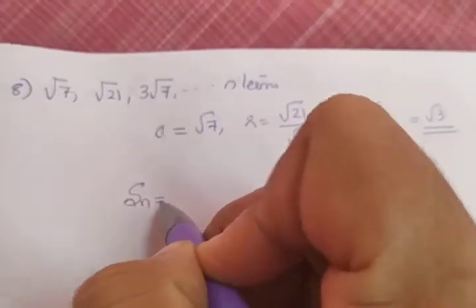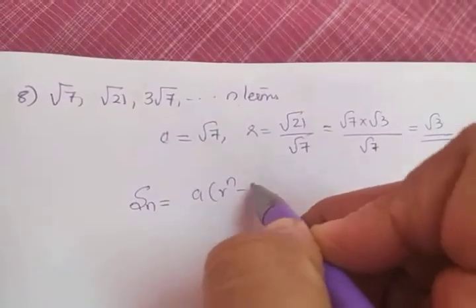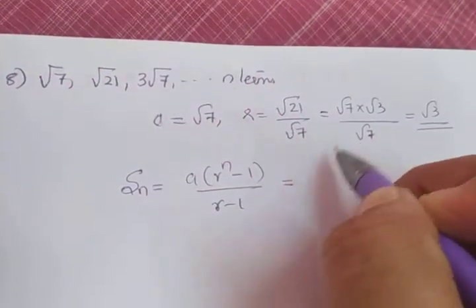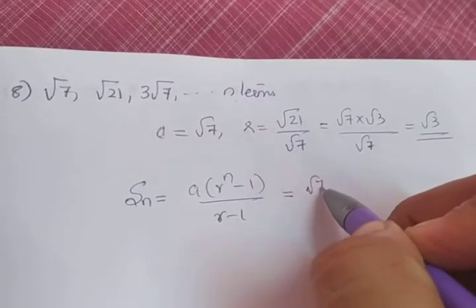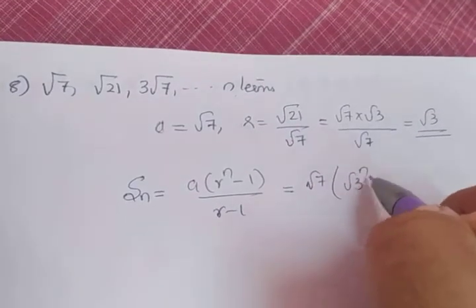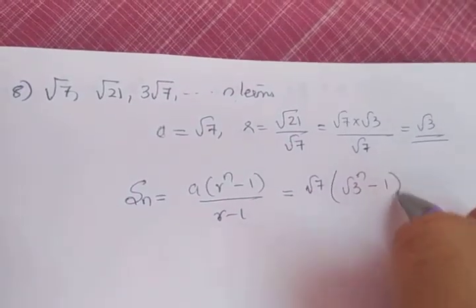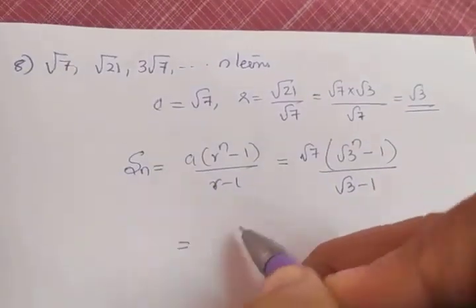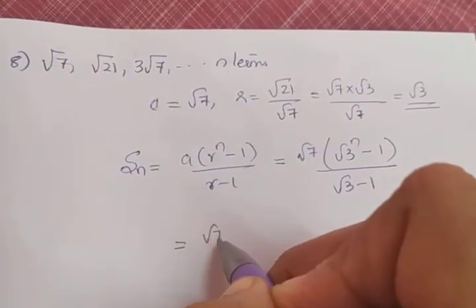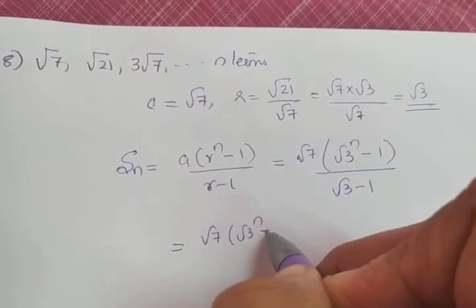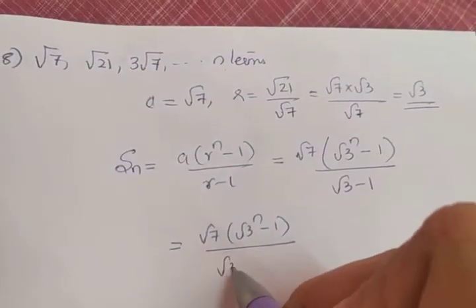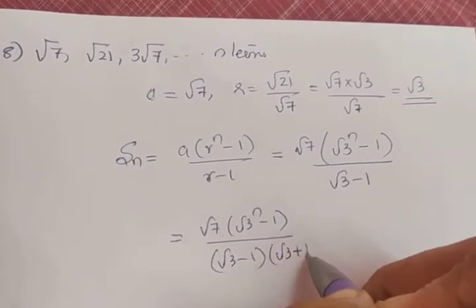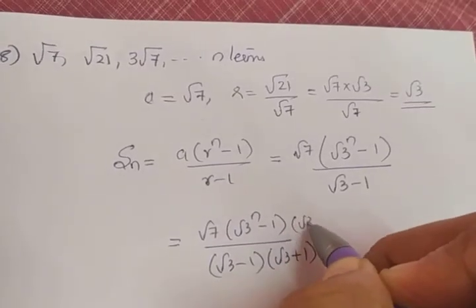The question is to find sum to n terms, Sn. Sn is equal to a(rⁿ - 1) / (r - 1), which is equal to √7 × (√3)ⁿ⁻¹ divided by (√3 - 1). We can rationalize the denominator: √7 × (√3)ⁿ⁻¹ divided by (√3 - 1), multiplied by the conjugate of (√3 - 1), which is (√3 + 1).